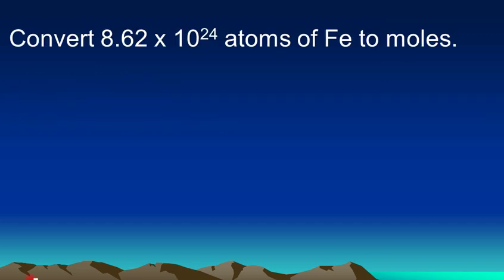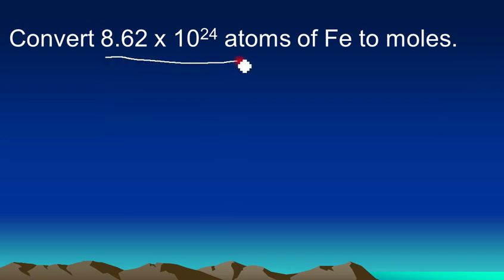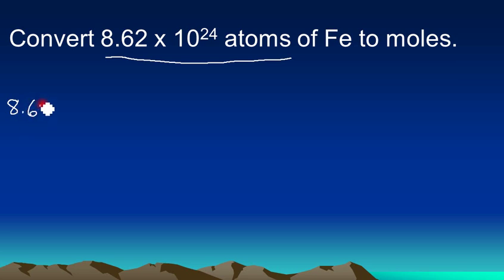Today we're going to do some calculations and learn how to convert atoms to moles and moles to atoms and vice versa. So we're starting with this problem here: convert 8.62 times 10 to the 24th atoms of iron to moles. The first thing we do when we carry out a conversion is write down what's given to us — 8.62 times 10 to the 24th atoms of iron.